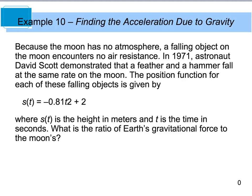So our last example says, because the moon has no atmosphere, a falling object on the moon encounters no air resistance. In 1971, an astronaut demonstrated that a feather and a hammer fell at the same rate on the moon. The position function for each of these falling objects is given by this function, and that should be t squared, where s(t) is the height in meters and t is the time. What is the ratio of Earth's gravitational force to the moon's?